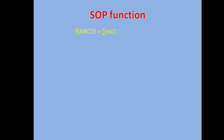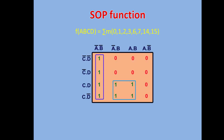For the SOP form, we'll assume this particular function f(A,B,C,D) = sigma m(0,1,2,3,6,7,14,15). This is the SOP expression. When we draw the K-map, all these cell numbers must be filled with one. This is the SOP K-map we have drawn.